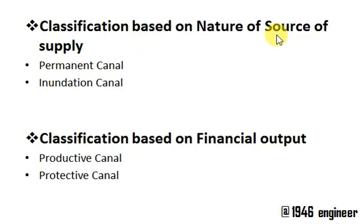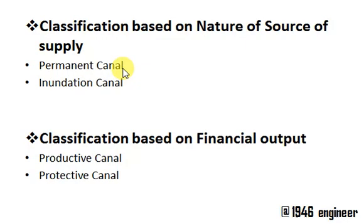Classification based on nature of source of supply: we have permanent canal and inundation canal. In a permanent canal, the source of water supply is permanent, meaning it is available 365 days in a year — such canals are also called perennial canals. They have masonry works and other permanent works. For inundation canals, water is only available when the river has floods or the reservoir storage level is full.